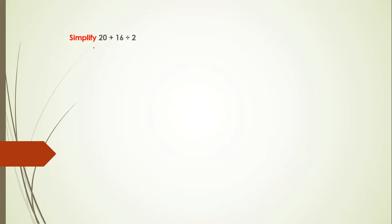Here is the problem. Simplify 20 plus 16 divided by 2. Before solving, first we will write the BODMAS. B stands for bracket.